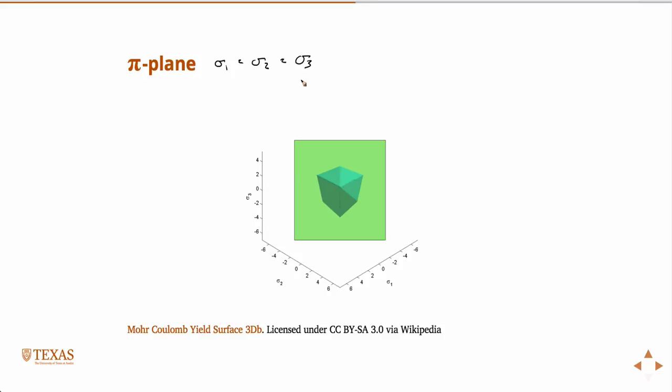So this is the end of that cone. And what I was saying about work hardening — this cone, or pyramid, would grow in that scenario. So if I'm inside this shape, I'm elastic. If I'm on the surface, I'm failed, or plastic, or inelastic.